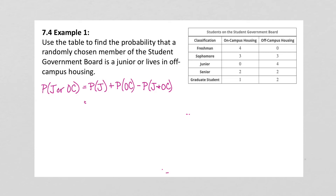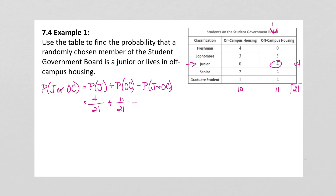The probability of a junior — there are four juniors, and we need our totals. If we add on-campus housing, there's 10. Off-campus, there's 11. So total, we have 21 students. Four out of 21 is the probability that we select a junior. The probability of off-campus is 11 out of 21, and then the ones that are juniors and living in off-campus housing is 4 out of 21.